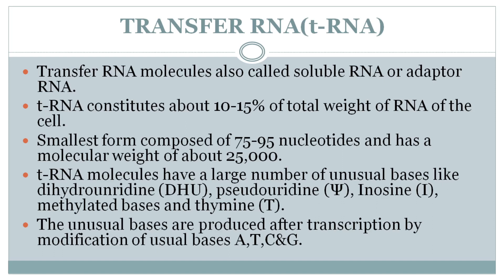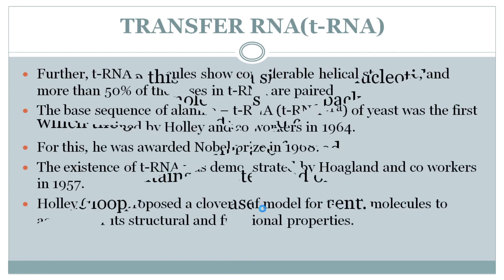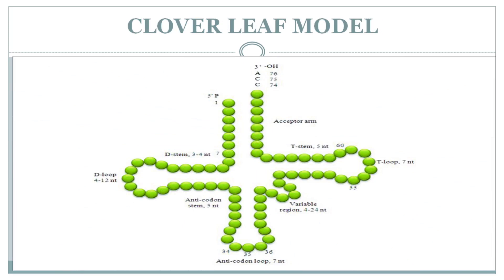The structure of tRNA is called the Cloverleaf model. It has a D loop, an anticodon loop, a T loop, and at the 3' end an acceptor region with a CCA sequence. tRNA has 4 arms: the acceptor arm is where the amino acid attaches.